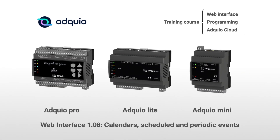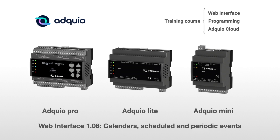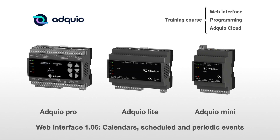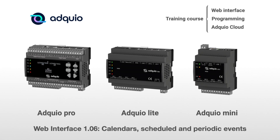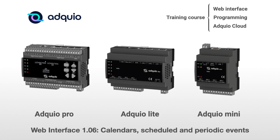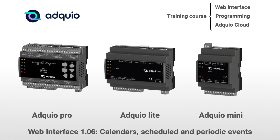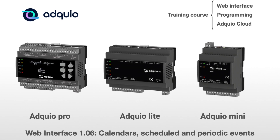Welcome to Chapter 6 of the Adpio web interface. This time, we are going to see the calendars, scheduled events, and periodic events.